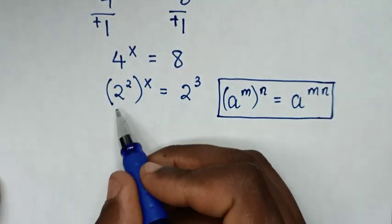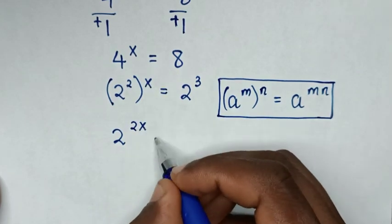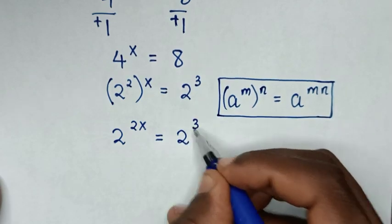Then it will be base of 2, power of 2 times x is power of 2x is equal to this 2 power 3.